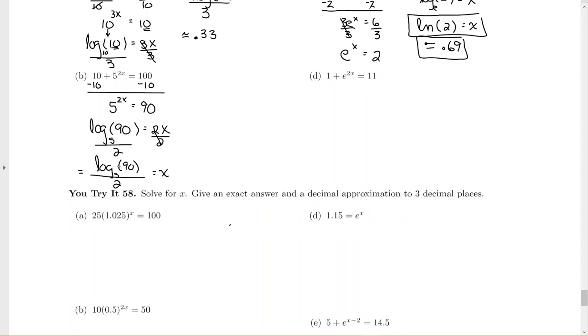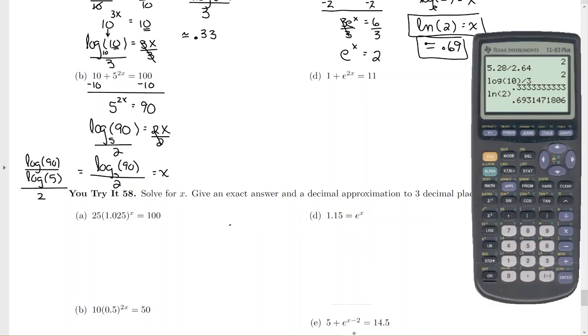For the decimal approximation, you can either use your logarithm button on your calculator if you have a TI-84, or you'll have to do change of base. Change the base to log base 10 of 90 divided by log base 10 of 5. Compute that out and then divide by 2. So I'm going to use my calculator. Log base 10 of 90 divided by log base 10 of 5 first. And then divide by 2. Don't round your answer, just hold the digits on your calculator. And then at the very end you can round to 2 decimal places. So this is going to round up to 1.40.